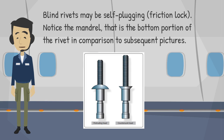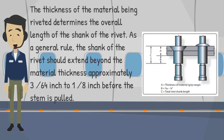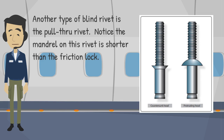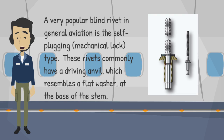Blind rivets may be self-plugging friction lock type. Notice the mandrel — that is the bottom portion of the rivet — in comparison to subsequent pictures. The thickness of the material being riveted determines the overall length of the shank. As a general rule, the shank should extend beyond the material thickness approximately 3/64 inch to 1/8 inch before the stem is pulled. Another type of blind rivet is the pull-through rivet; notice the mandrel on this rivet is shorter than the friction lock. A very popular blind rivet in general aviation is the self-plugging mechanical lock type.